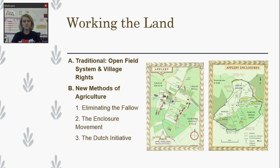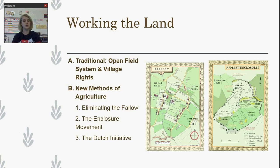However, things are going to start to change in the 18th century. The first thing that changes is they eliminate what's called the fallow — leaving land fallow. This means that more land is being used to grow crops. Wheat drains nutrients from the soil, but crops like corn and potatoes allow you to use land without draining those nutrients. So this allows for more food to be produced.